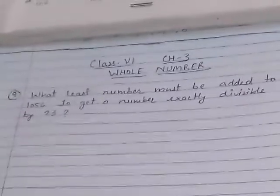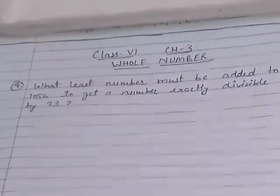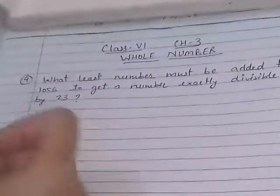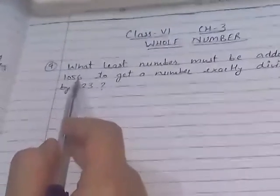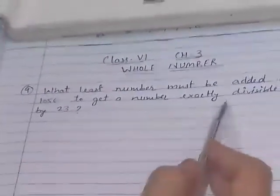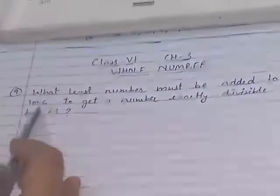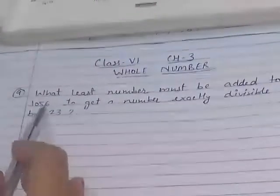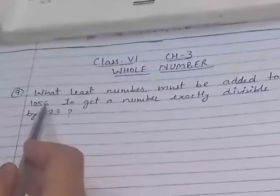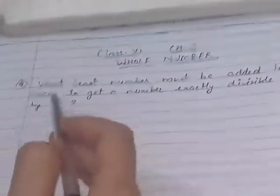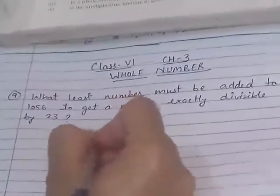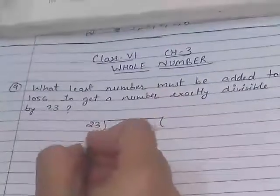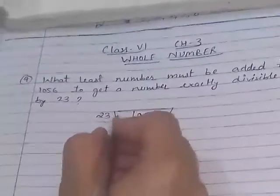Hello everyone, this is the 8th video of chapter 3, whole number from RS and we are doing exercise 3E. Question number 9 of exercise 3E is: what least number must be added to 1056 to get a number exactly divisible by 23? First you have to divide 1056 with 23, so divide it.